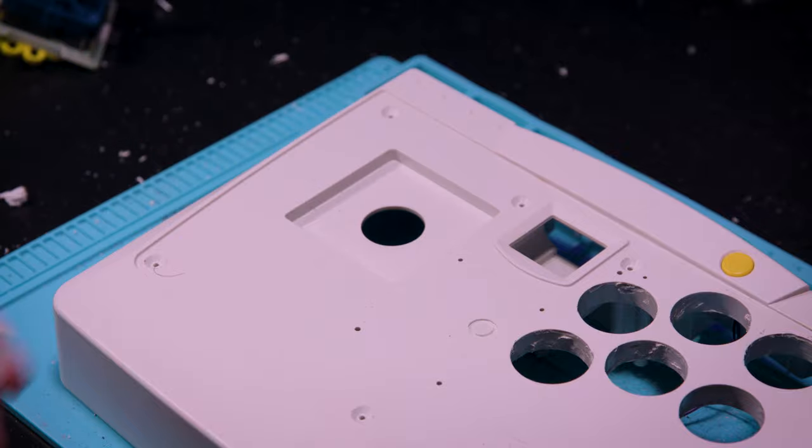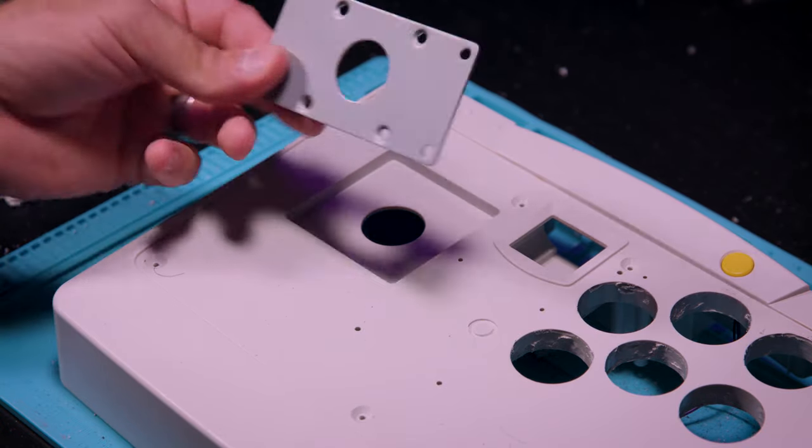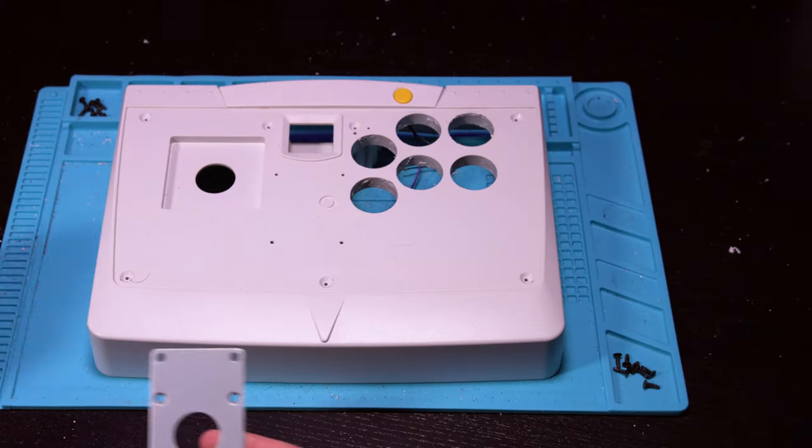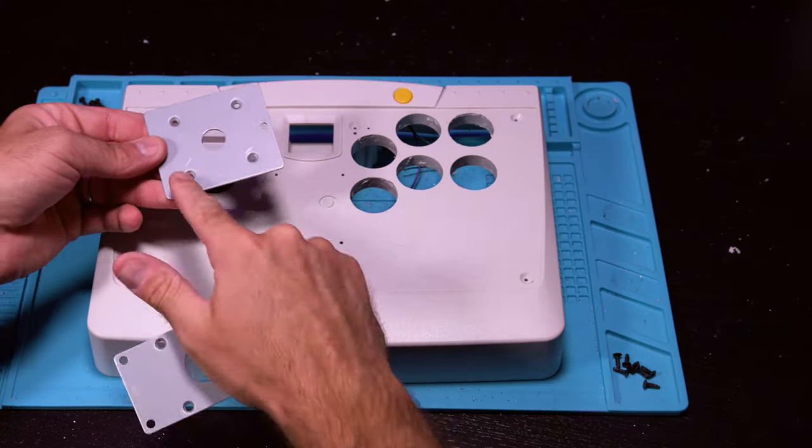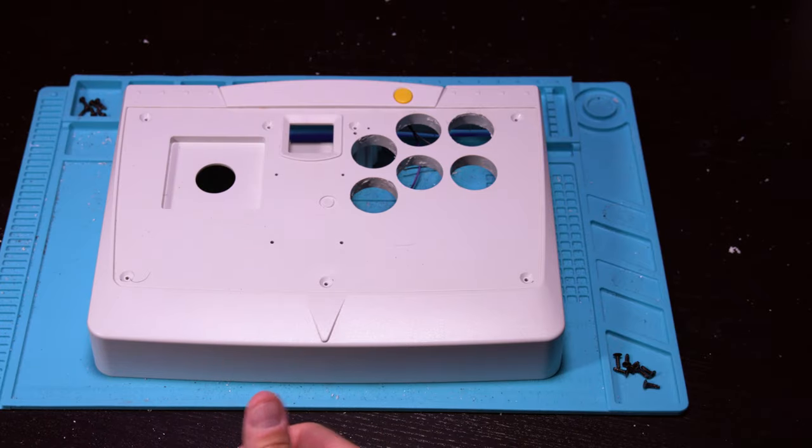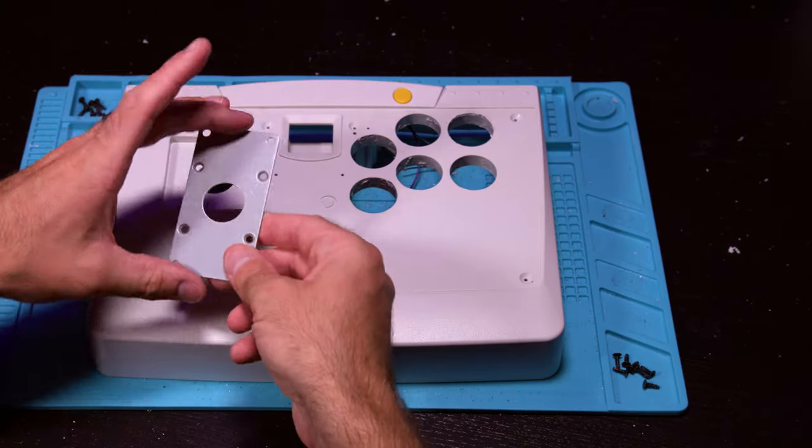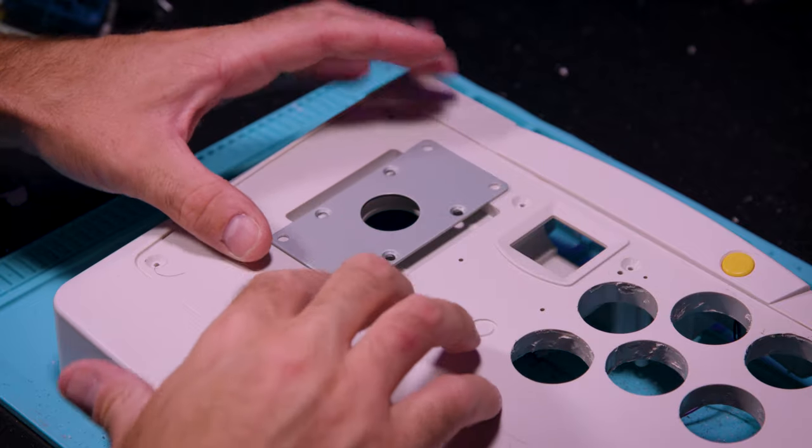To do that, I just take the original plate that it came with. The best way is to just use the plate that came with your joystick and line that up. I like to just use some tape on the top and the bottom to tape that down so that when you drill your holes, they're precise.